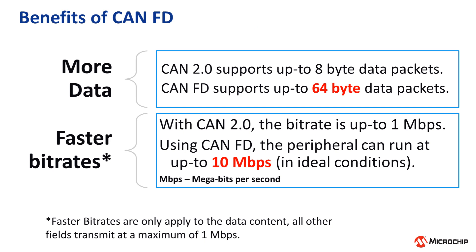CAN FD is a new version of the CAN specification that allows for larger and faster data transmissions. In classic CAN 2.0, the maximum amount of data that can be sent with each message was limited to 8 bytes. The newer CAN FD specification improves upon this by allowing for up to 64 bytes in each message. The CAN FD controller can be configured to a data bitrate of up to 10 Mbps using a 40 MHz CAN FD clock.